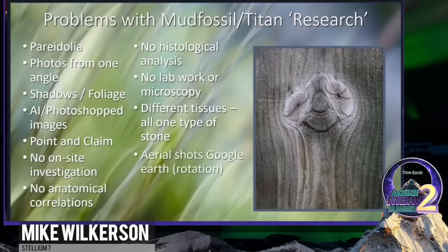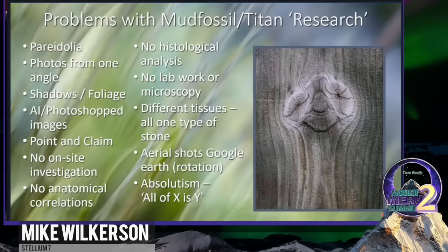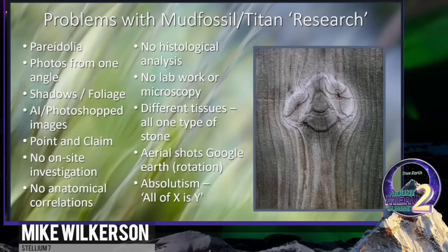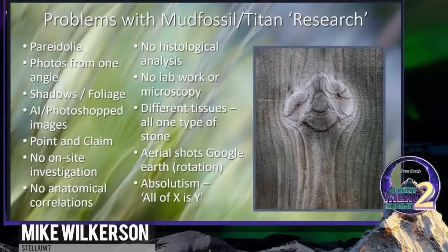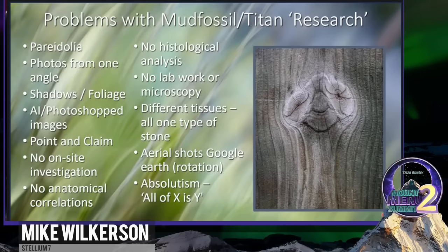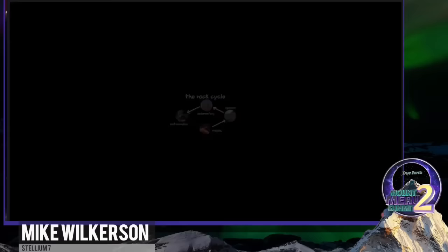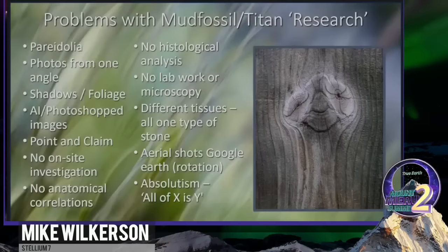These were some of the problems I was having with the mud fossil titan research. Pareidolia — seeing a face in something when it's not really there. Photos from one angle only, shadows, people photoshopping images, claiming that because it looks like something it is something, with no additional investigation whatsoever — no anatomical analysis, no histological analysis, no microscopy, nothing. I decided I wasn't going to approach it that way. I was going to get my anatomy books out and approach it in a more methodical manner.